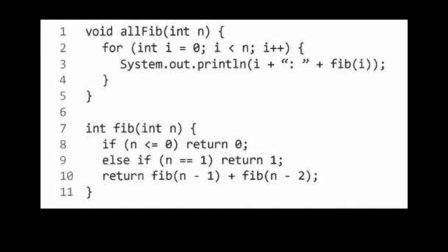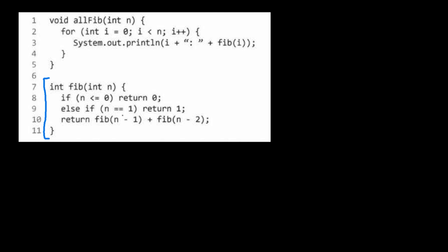The last problem is another Fibonacci problem, slightly modified. The `fib` function itself is identical to the previous one. But now there's a function called `allFib` that takes n and loops through n times, calling fib(i) at each iteration. You might think: I know fib is O(2ⁿ) and this loops n times, so it must be n × 2ⁿ. But that would be wrong — because the value passed into fib is changing on every iteration, which actually changes the time complexity.